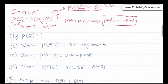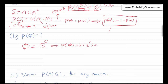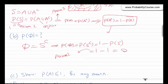The second item asks for the probability of the empty set. We can use the previous result: the empty set is the complement of the sample space. So P(∅) = P(Sᶜ) = 1 − P(S). But P(S) = 1 by axiom 2, so P(∅) = 0. This makes sense because the empty set has no elements, so whenever you perform the random experiment, the outcome cannot belong to the empty set.